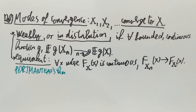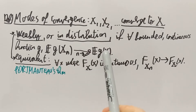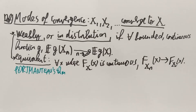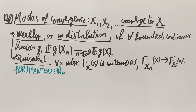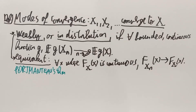Portmanteau's theorem gives you a few equivalent characterizations of weak convergence. It includes that bounded continuous functions converging in expectation — which is the definition of weak convergence — is equivalent to distribution functions converging wherever the limiting distribution function is continuous. Now, the distribution function is non-decreasing and bounded, so it can actually only have a countable number of discontinuity points. Therefore this is not a really big restriction — there are only countably many places where the limiting distribution function is not continuous. At those places we do not necessarily have convergence, but everywhere else we do. That's an equivalent definition of weak convergence.